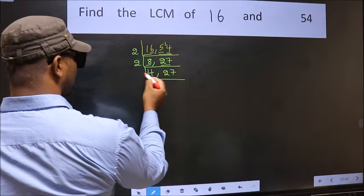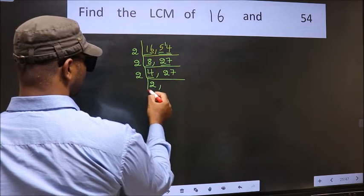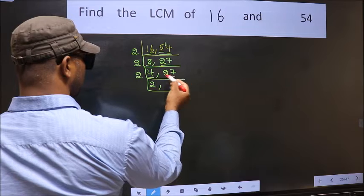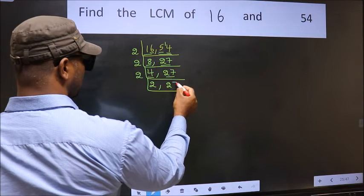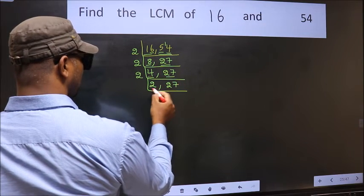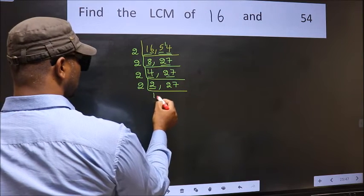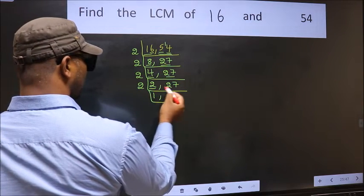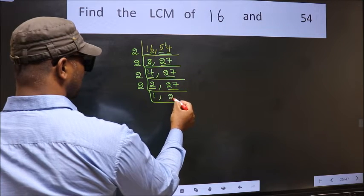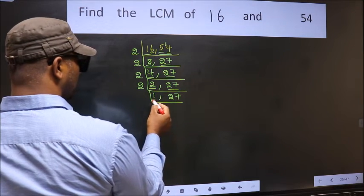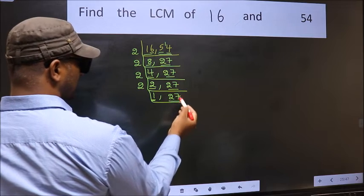Now here we have 4 — 2 times 2 is 4. The other number 27 is not divisible by 2, so we write it down as it is. Now here we have 2 — 2 is a prime number, so 2 times 1 is 2. The other number 27 is not divisible by 2, so write it down as it is. We got 1 here, so focus on the other number 27.